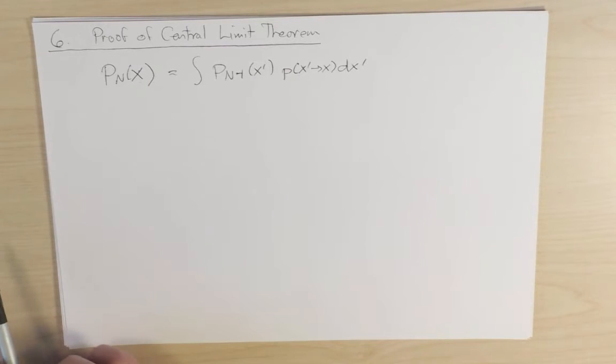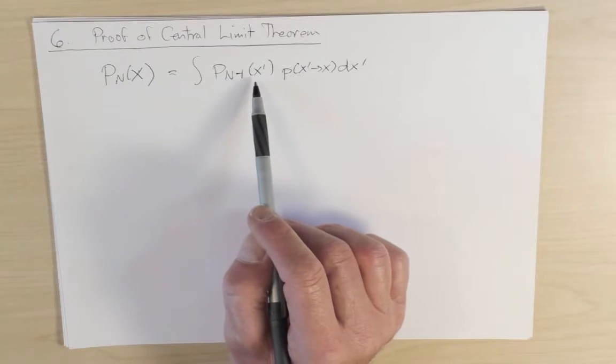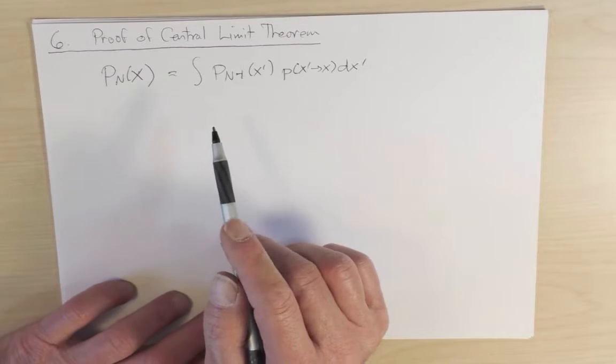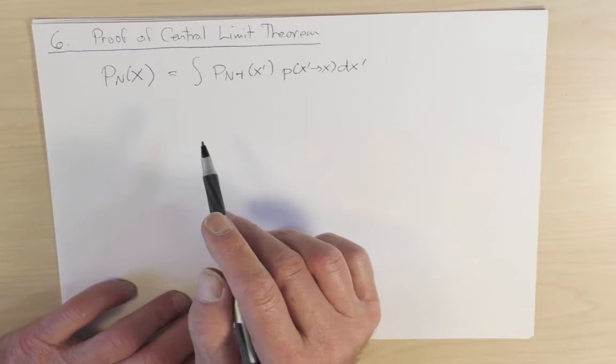Now in order to make progress with this and simplify it, I'm going to make use of Fourier transform technology. Note that this object is known as a convolution, because we go from x prime to x by this single step. If I Fourier transform this equation, convolution in real space turns out to be multiplication in Fourier space.